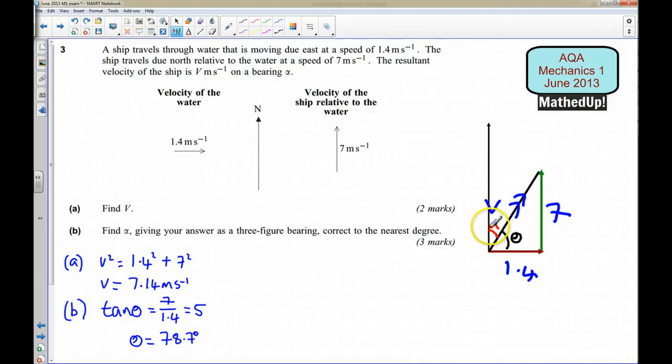So now alpha is going to be, because this makes a right-angle, because this is north and this is east, alpha is going to be 90 take away this. So over here, let me say that alpha is going to be equal to 90 take away 78.7, which gives us 11.3 degrees.